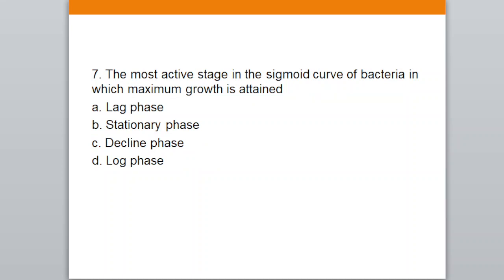Question seven: the most active stage in the sigmoid curve of bacteria where maximum growth is attained — A. lag phase, B. stationary phase, C. decline phase, D. log phase. The correct answer is D — log phase, the most active stage in the sigmoid curve of bacteria, also known as the exponential phase.